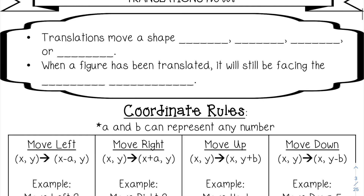A translation will move a shape either right, left, up, down, or a combination of those directions. When a figure has been translated, it will still be facing the same direction.